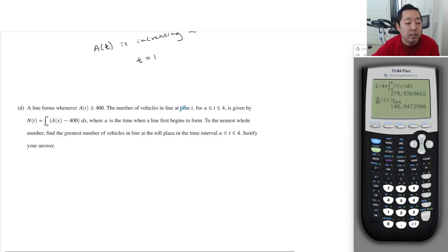The line forms whenever A(t) is greater than or equal to 400. The number of vehicles in line time t for t between a and 4 is given by this equation where a is the time at which the line first begins to form. To the nearest whole number, find the greatest number of vehicles in the line at the toll plaza in the time interval from a to 4 and justify your answer. Okay, so they didn't give you this end point. You have to know when its line first begins to form. So it doesn't really matter too much but apparently whatever a is, it should be 400 because that's when it begins to form, right? So we know that information. Even without knowing what a is, we can figure out that A(a) has to be 400 because that's when the line first begins to form, right? And that's when we start getting to 400 people. So we know that it must start at 400 there.